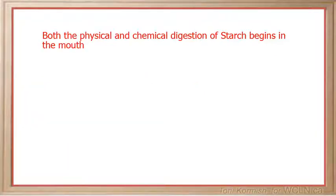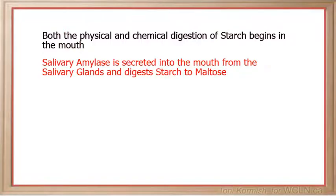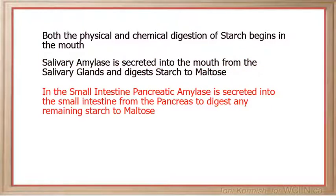To quickly recap: both the physical and chemical digestion of starch begins in the mouth. Salivary amylase is secreted into the mouth from the salivary glands and digests starch to maltose. In the small intestine, pancreatic amylase is secreted from the pancreas to digest any remaining starch to maltose.